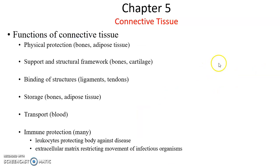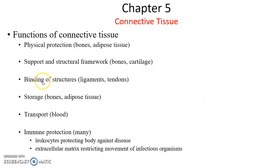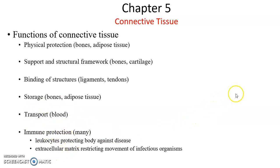Functions of connective tissue — there are a lot. Protective, physical protective functions: bones and adipose tissue can protect underlying organs. Structural or support functions: bones and cartilage can help give the body shape. They can bind structures — ligaments and tendons. Storage: bone stores minerals, adipose tissue stores lipids and triglycerides. Transport: blood moving things around. And immune protection, because there are so many leukocytes and immune response cells found in the connective tissue.